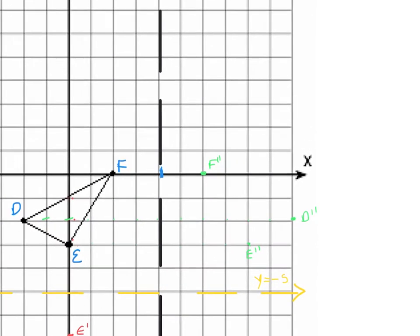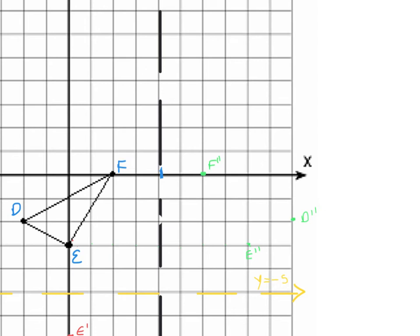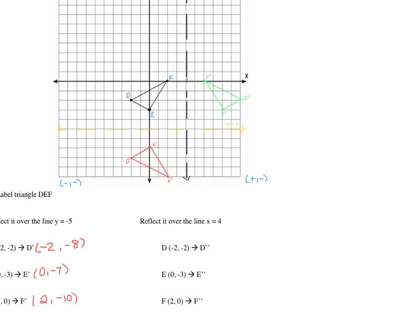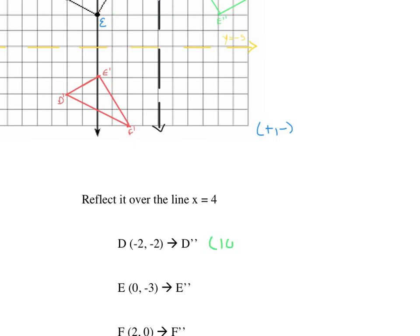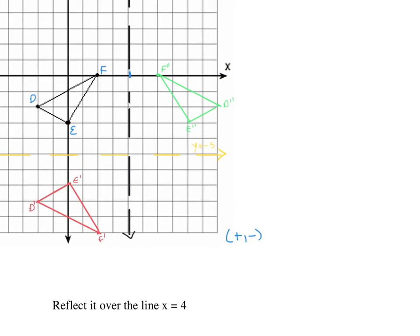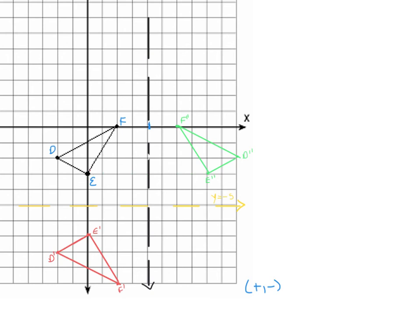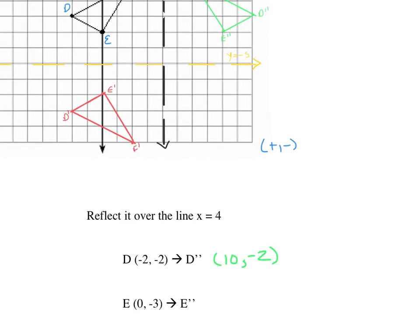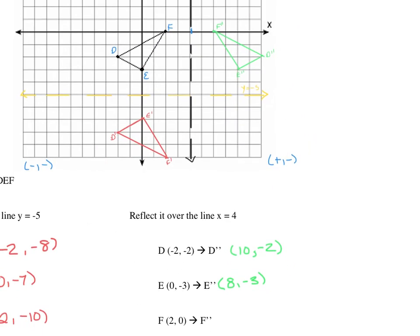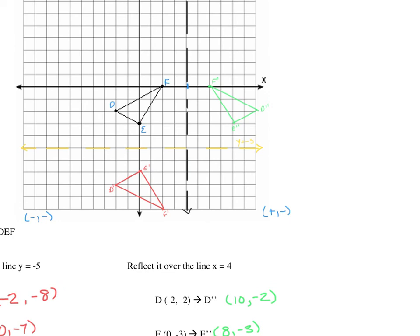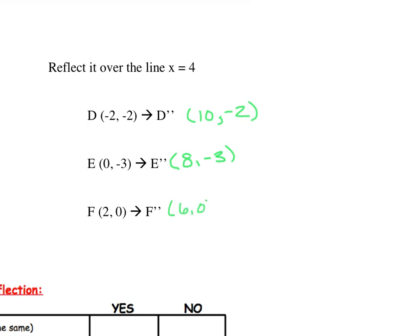I'll erase those jump marks. Now that I have D double prime, E double prime, and F double prime plotted, I'll connect those with straight lines — and I just drew triangle D double prime, E double prime, F double prime. Let's label those points: D double prime is (10, −2), E double prime is (8, −3), and F double prime is (6, 0).